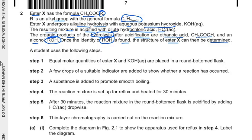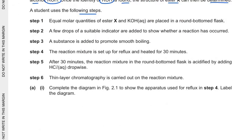The organic products of the hydrolysis after acidification are ethanoic acid and an alcohol ROH. Once the identity of ROH is found, the structure of the ester X can then be determined. So here the student uses the following steps and all these steps are given here. You can just pause the video and read the whole process, all the steps. Now question A, sub-question A1 is complete the diagram in figure 2.1 to show the apparatus used for reflux in step 4.